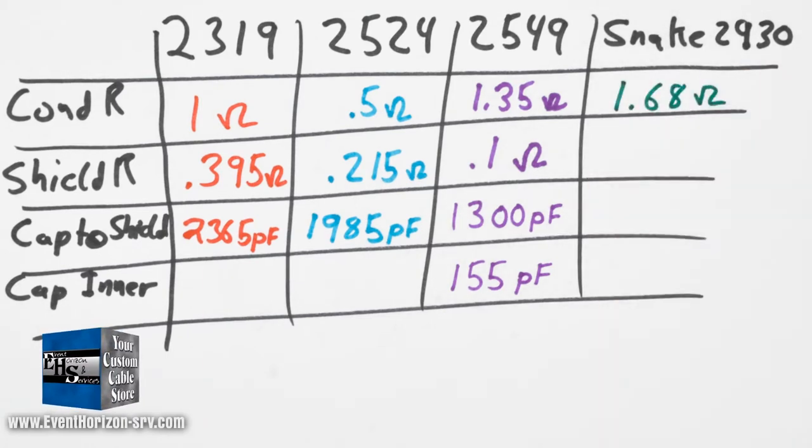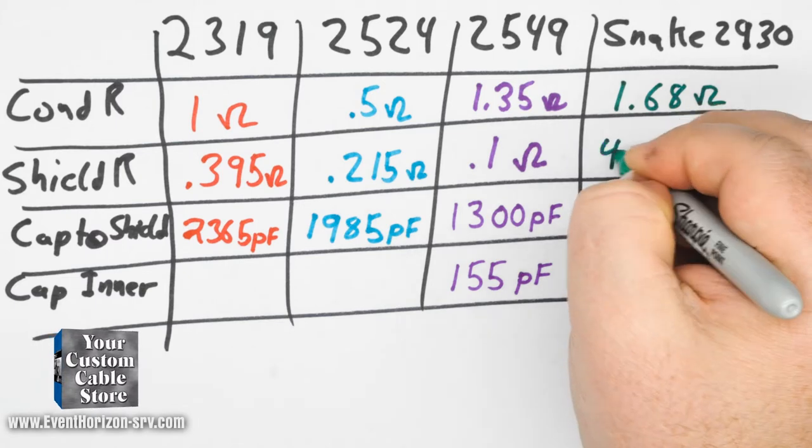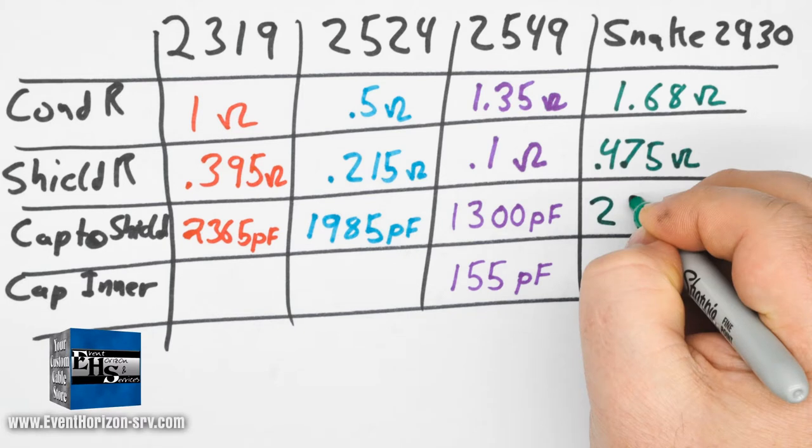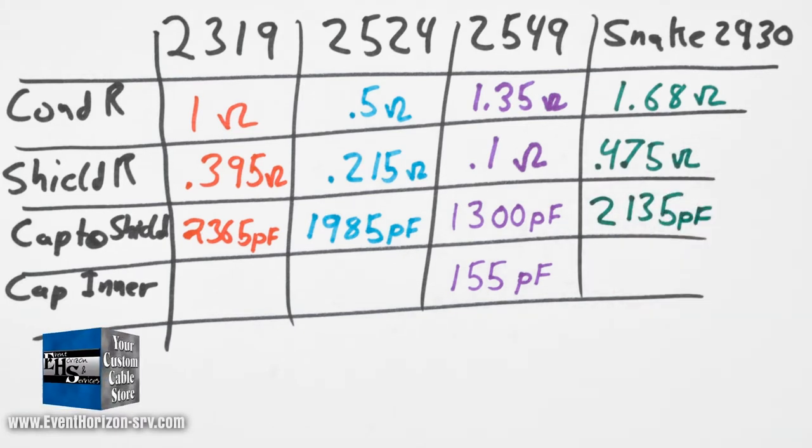The capacitance between conductors is 185 picofarads.